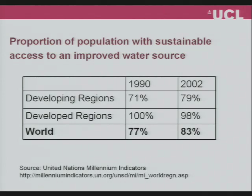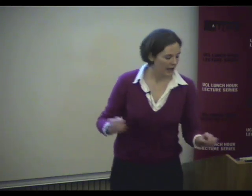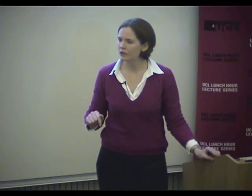When we talk about basic access, we're not talking about the level I enjoy - in my one bedroom flat I have seven water points within falling-over distance. This level of access is 20 litres per person per day within one kilometre of the home. It's a fairly low bar. Back in the year 2000, the United Nations set the Millennium Development Goals, two of which related to water and sanitation - to reduce by half the proportion of people without access by 2015.